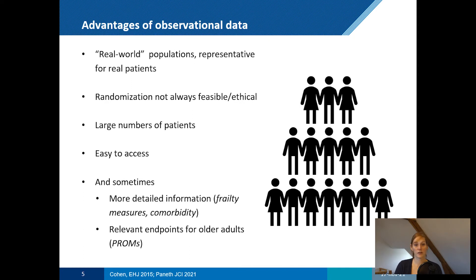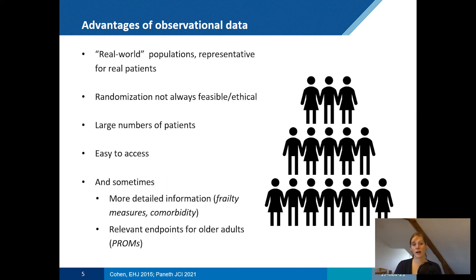Trials often lack good information on the frailty status of an older adult or on comorbidity, while in some observational cohorts this may be easier to gather. Finally, randomized clinical trials often do not incorporate relevant endpoints specifically for older adults — not only survival, which we traditionally measure in oncology, but also endpoints such as functional decline or quality of life, which are particularly relevant for older patients.